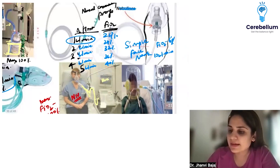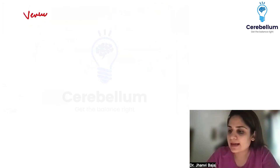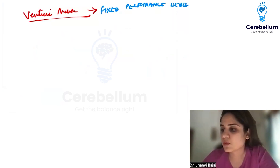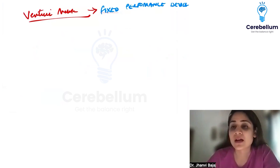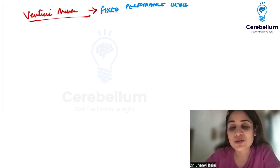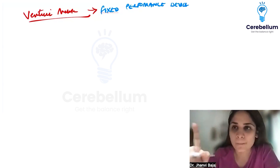We also missed the venturi mask - go back and see the picture of it. The most important thing to remember about the venturi mask is that it is called a fixed performance device. A fixed performance device means that however much FiO2 you set, that exact FiO2 will be delivered to the patient - just like a consistent performer, unlike a variable one.